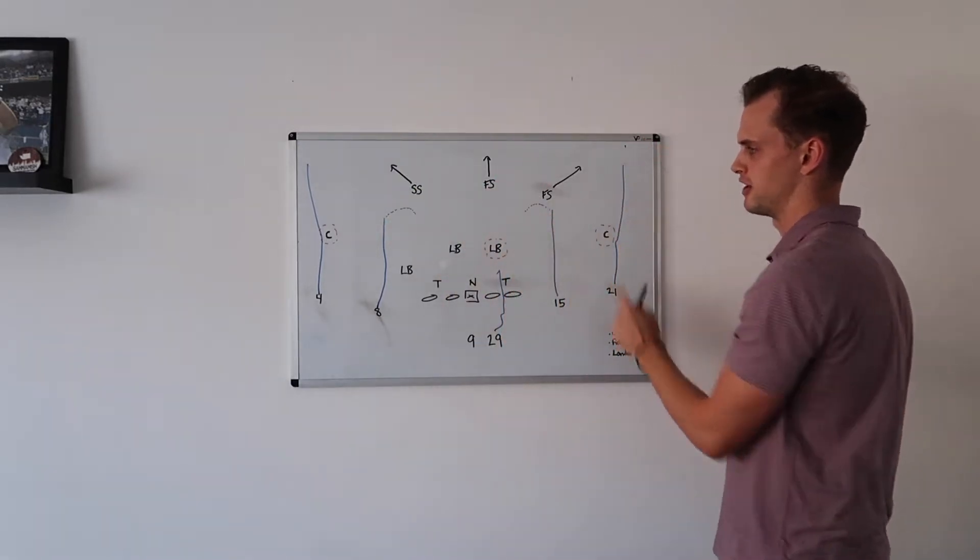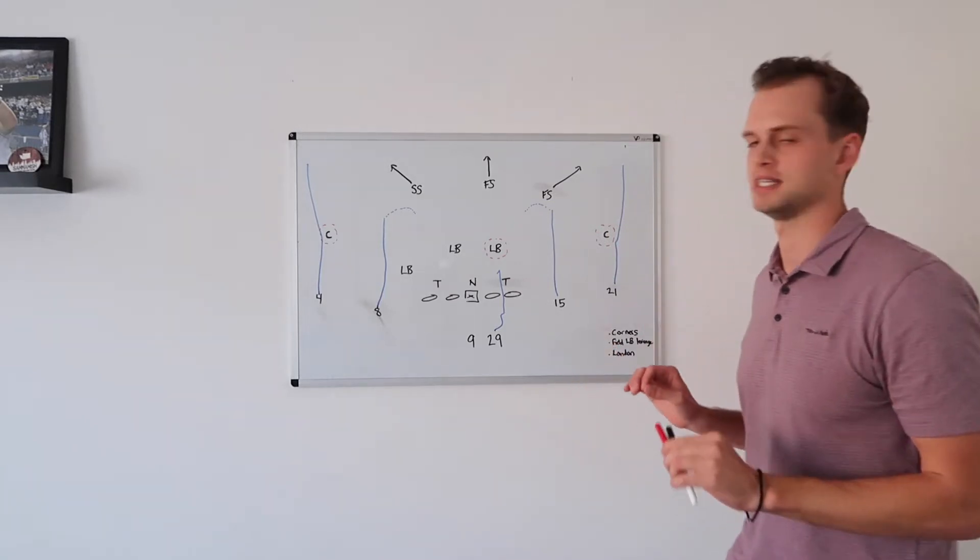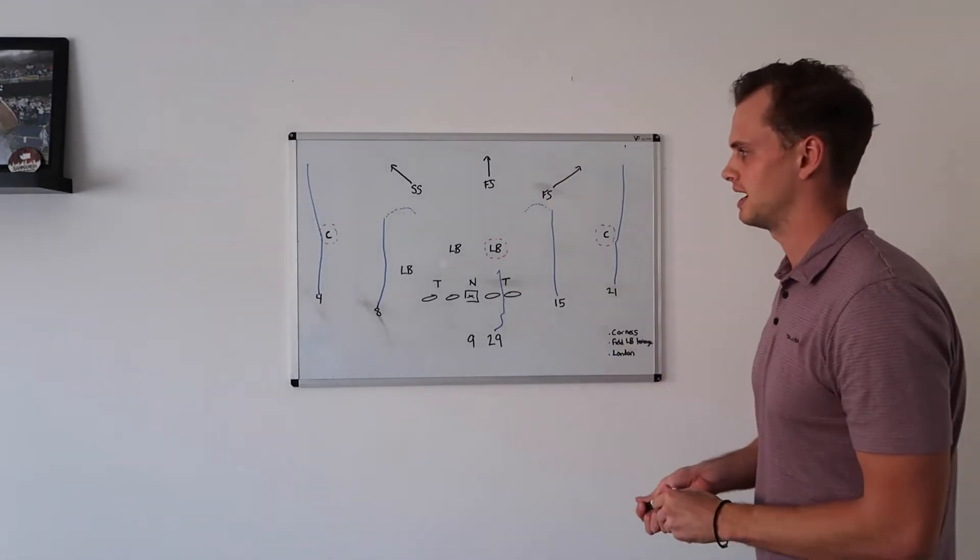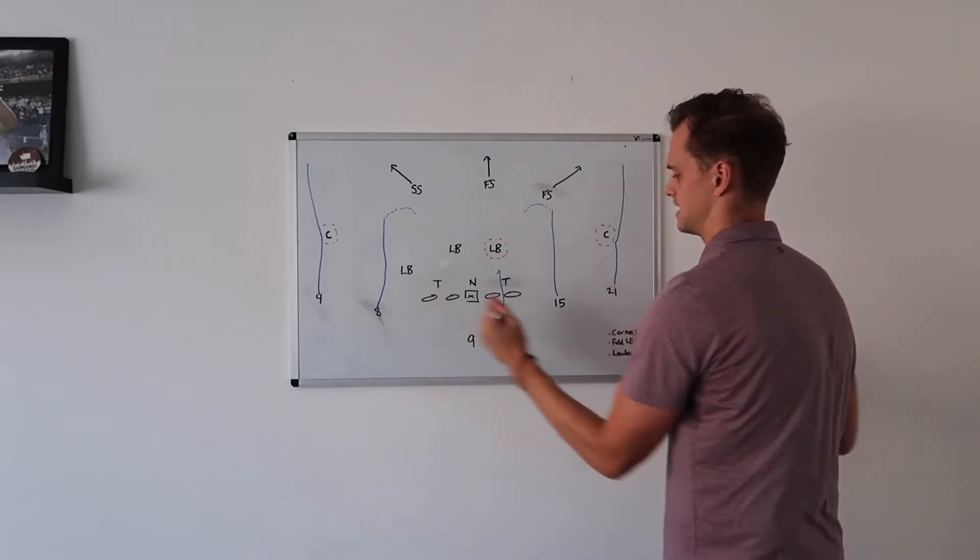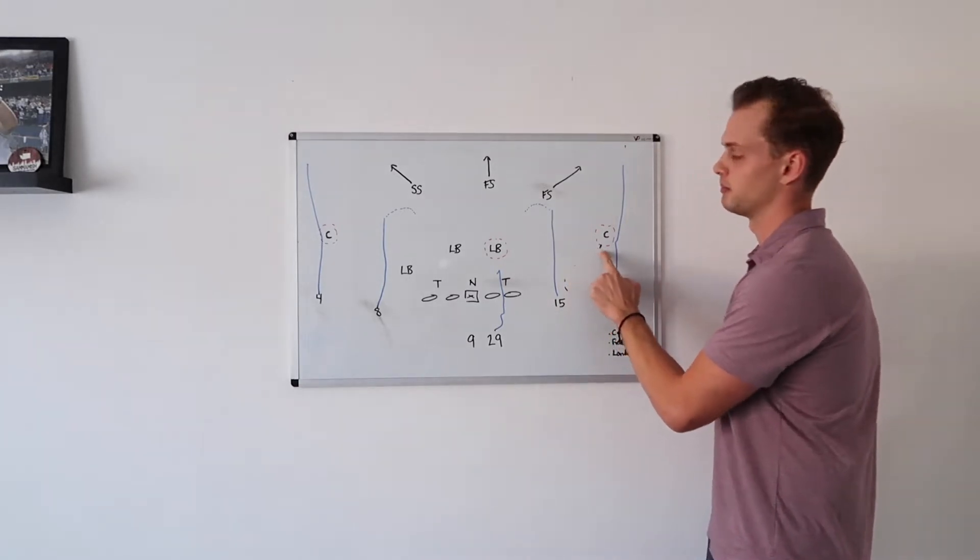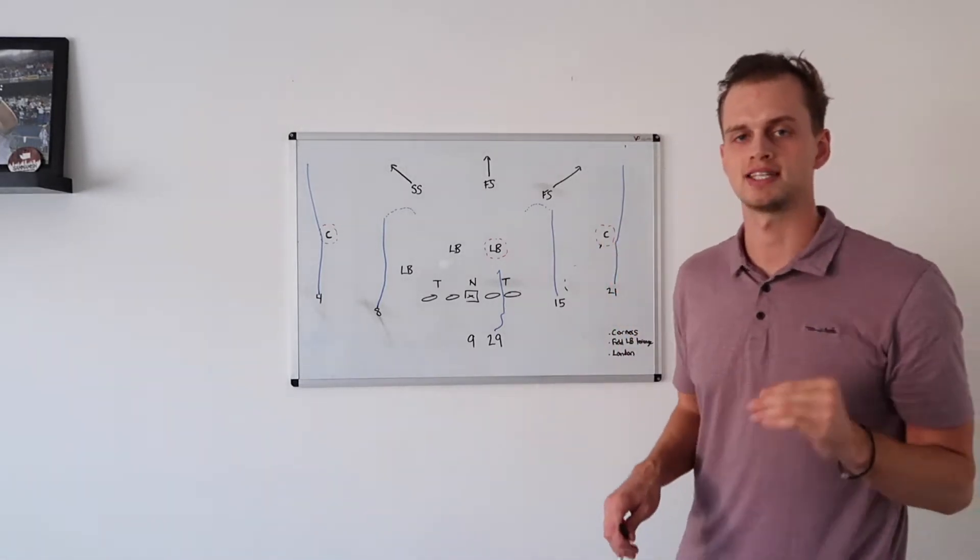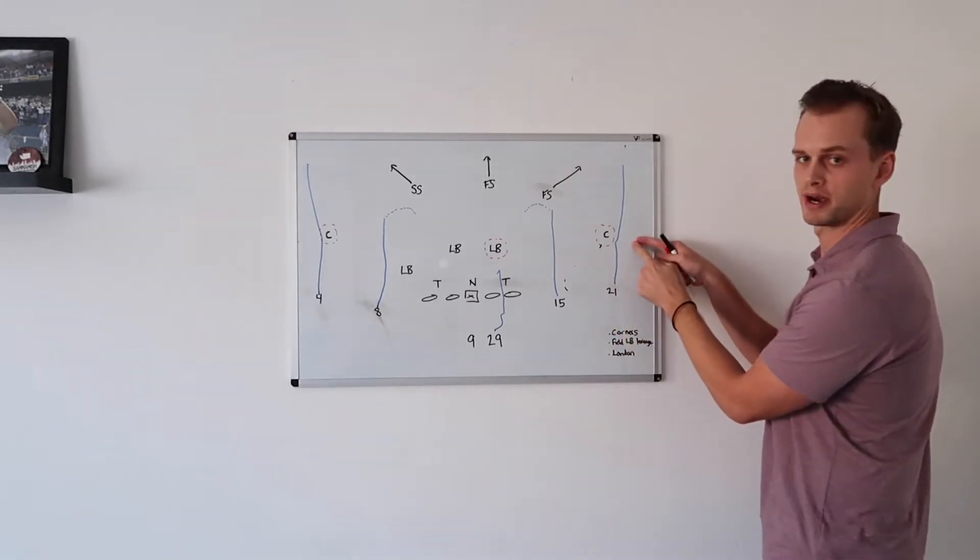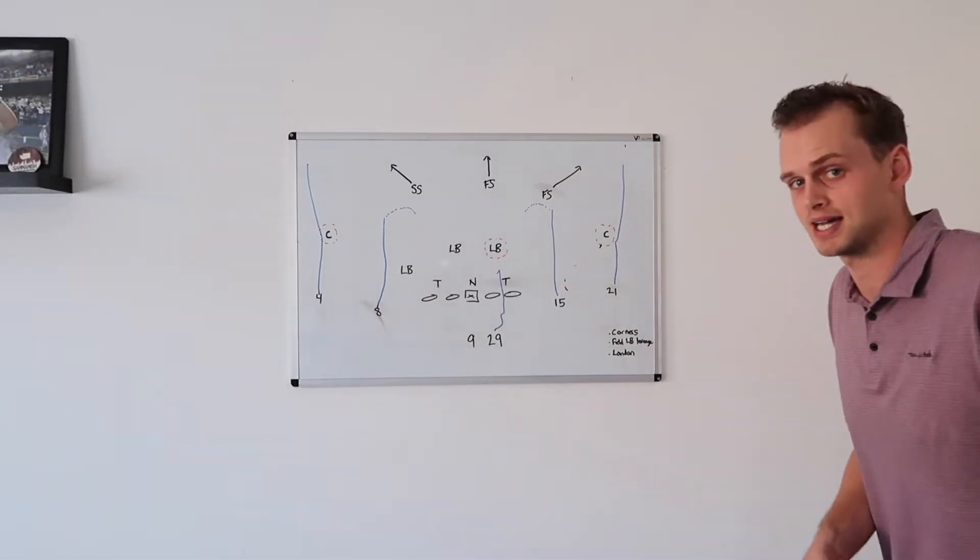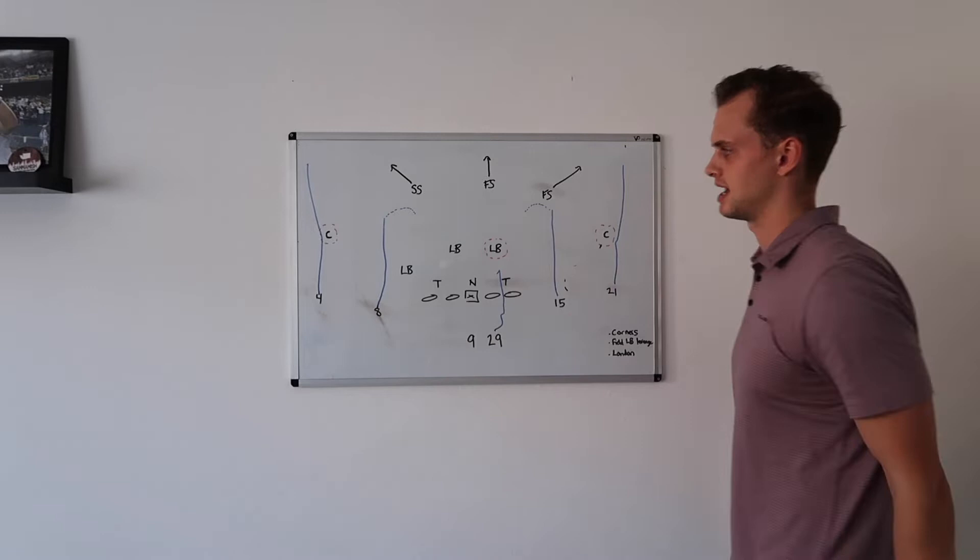You're going to have deep third, middle third, deep third, and I highlighted these three defenders in red because they all have unique leverages that ultimately dictate why this play happens the way it does. Both these corners have inside leverage on these receivers. The why behind that is they are trained to, if this number two receiver breaks out on a quick five yard out route, they will jump that and try to take that away.